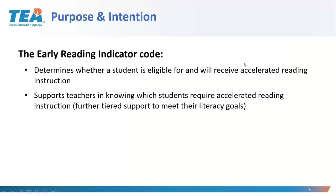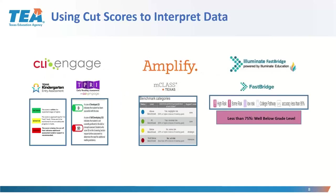The ERI code determines whether a student is eligible for and will receive accelerated reading instruction. Importantly, it supports teachers in knowing which students require that accelerated reading instruction to meet their literacy goals. Many students' ERI scores may look different this year than in a typical non-COVID year, making it especially important to see where kids are and give them support right away. I'll mute and give it to Mary to go over the benchmarks.